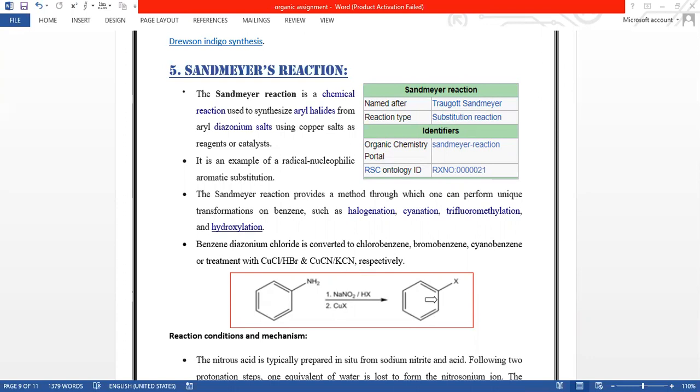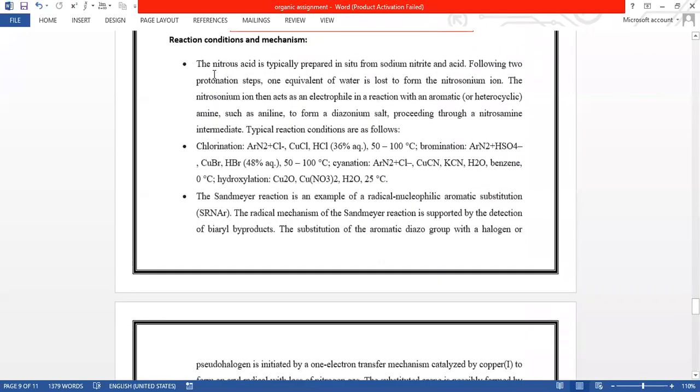This is aniline and we can get aryl halide from aryl diazonium salt using copper salt as a reagent. So this reaction includes condition and mechanism.